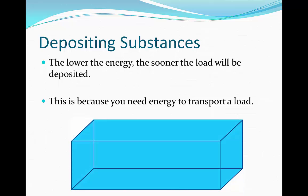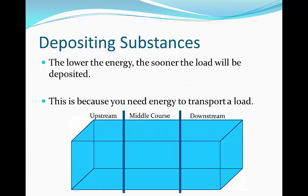Here we have a cross section of what a river should look like, divided into three stages: the upstream, the middle course, and downstream. In the upstream there is far more energy and the amount of load can be transported through the river, so it generally doesn't get deposited and is currently moving through.